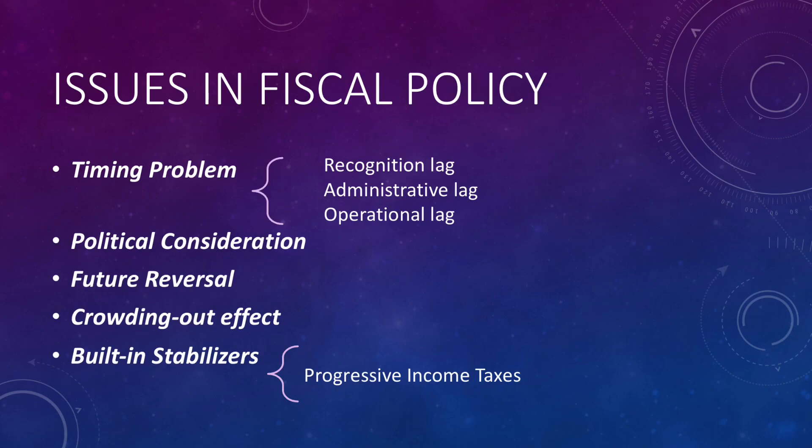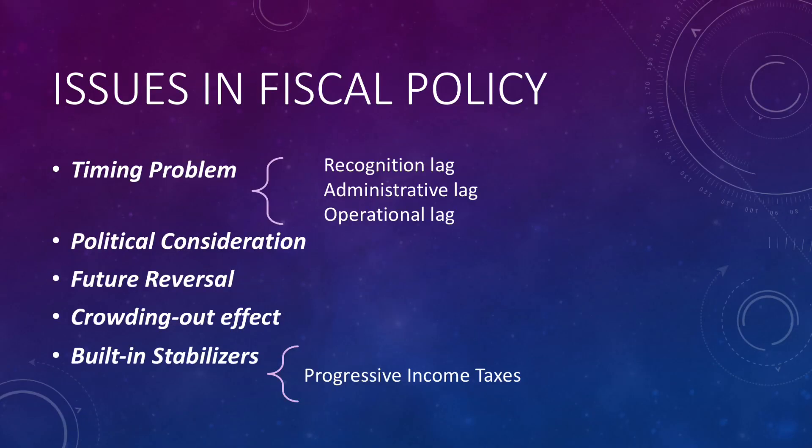Does fiscal policy work? The answer is not really conclusive because there are many limitations. First, we have the timing problem. There are actually three lags: the recognition lag, which means there is a timing difference between an economic event occurring and when it becomes known — it takes time to recognize inflation or a recession; the administrative lag, which is the delay in government bureaucracy and the time for a problem to be addressed by the executive and legislature; and the operational lag, meaning it takes time for a fiscal policy action to actually take effect. Because of these three delays, there is a timing problem in fiscal policy.